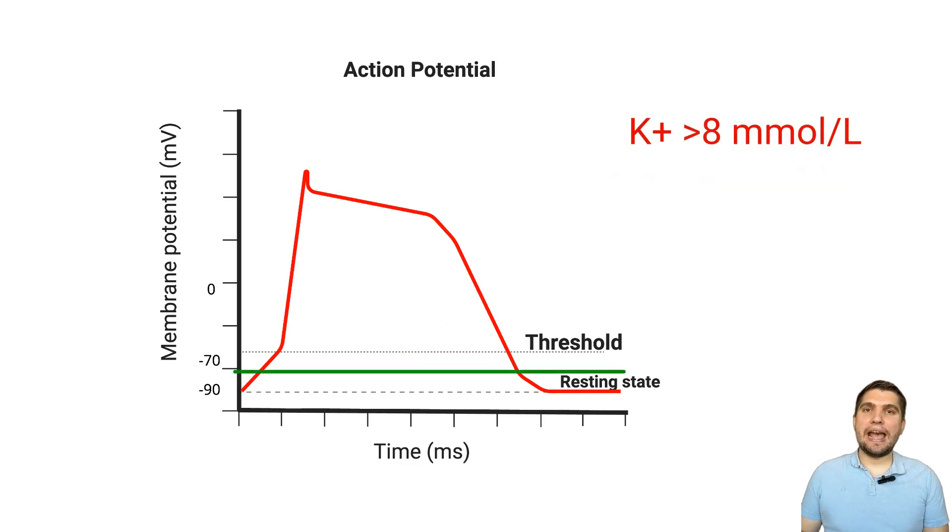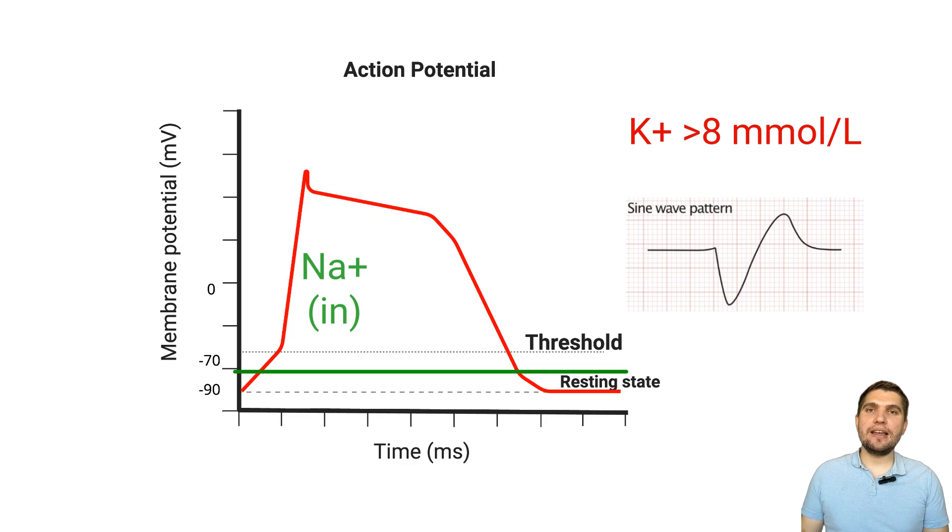But here is the catch. At higher potassium levels, typically above 8 millimoles per liter, the elevated resting membrane potential inactivates sodium channels. This is because sodium channels require the membrane to return to a more negative potential to reset from inactivation to a ready-to-fire state. When the resting membrane potential stays elevated due to hyperkalemia, sodium channels can't reset, so they're unavailable for activation. This situation reduces sodium influx, slows conduction velocity dramatically, widens QRS complexes on ECG, and, if severe enough, creates a life-threatening sine wave ECG pattern.